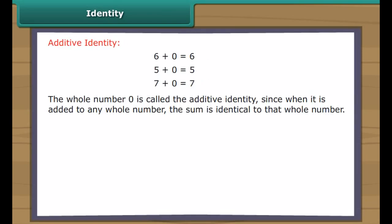Identity. The whole number zero is called the additive identity, since when it is added to any whole number the sum is identical to that whole number. The whole number one is called the multiplicative identity, since when it is multiplied to any whole number the product is identical to that whole number.